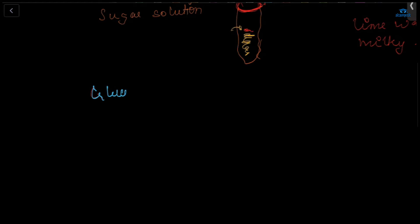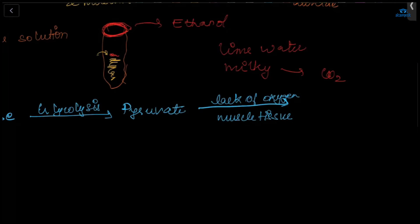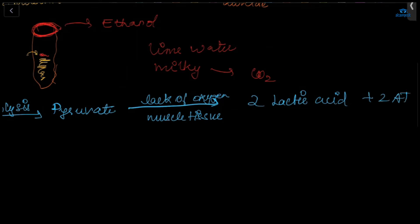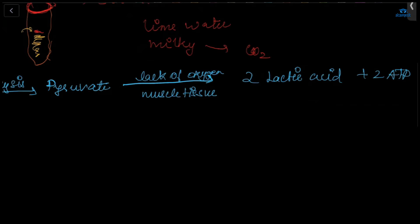Due to lack of oxygen in the muscle tissue, pyruvate is broken down into two molecules of lactic acid and two ATP. Because of this lactic acid building up in the muscles, we get cramps. Animals like cheetahs and deer also get cramps for the same reason.